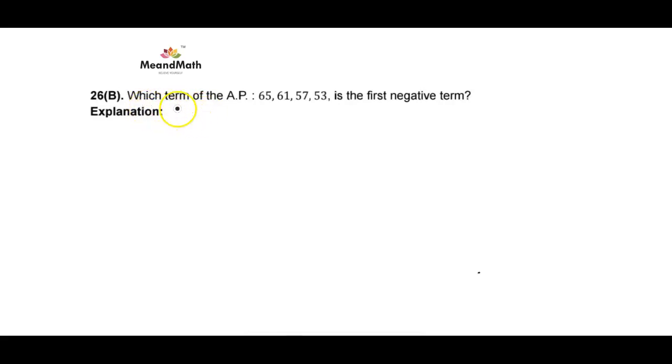So the question here is: which term of the AP {65, 61, 57, 53} is the first negative term? We have to find the value of n - which particular term.